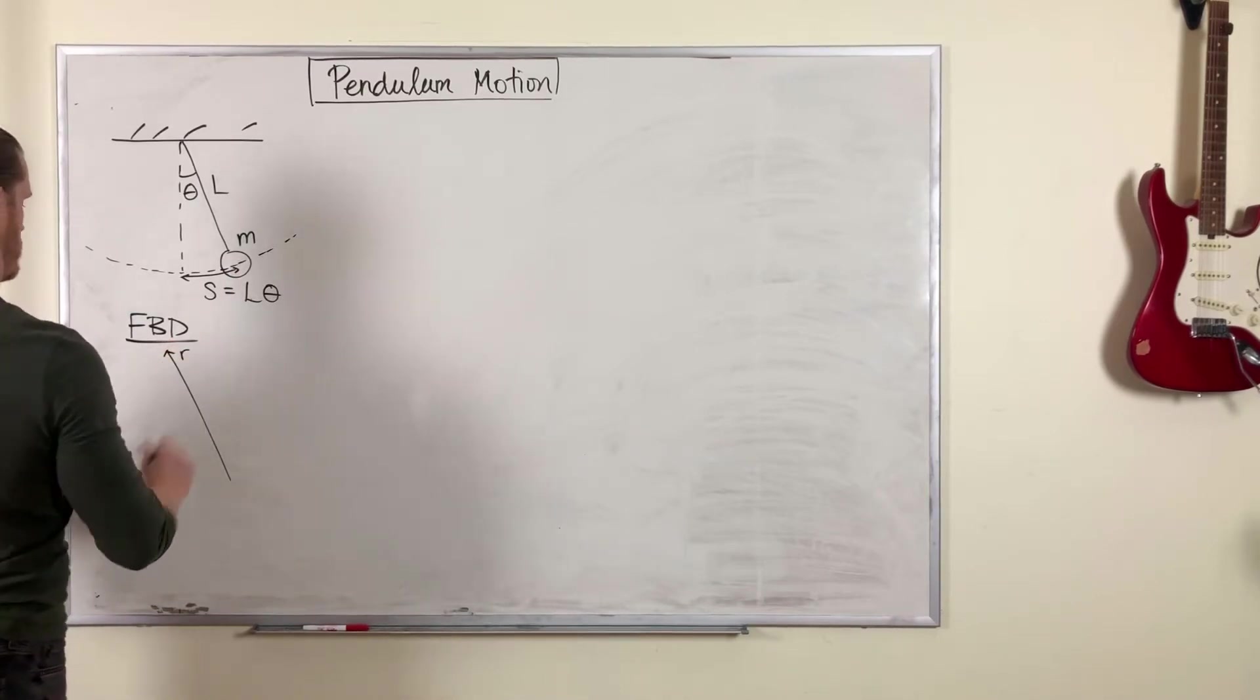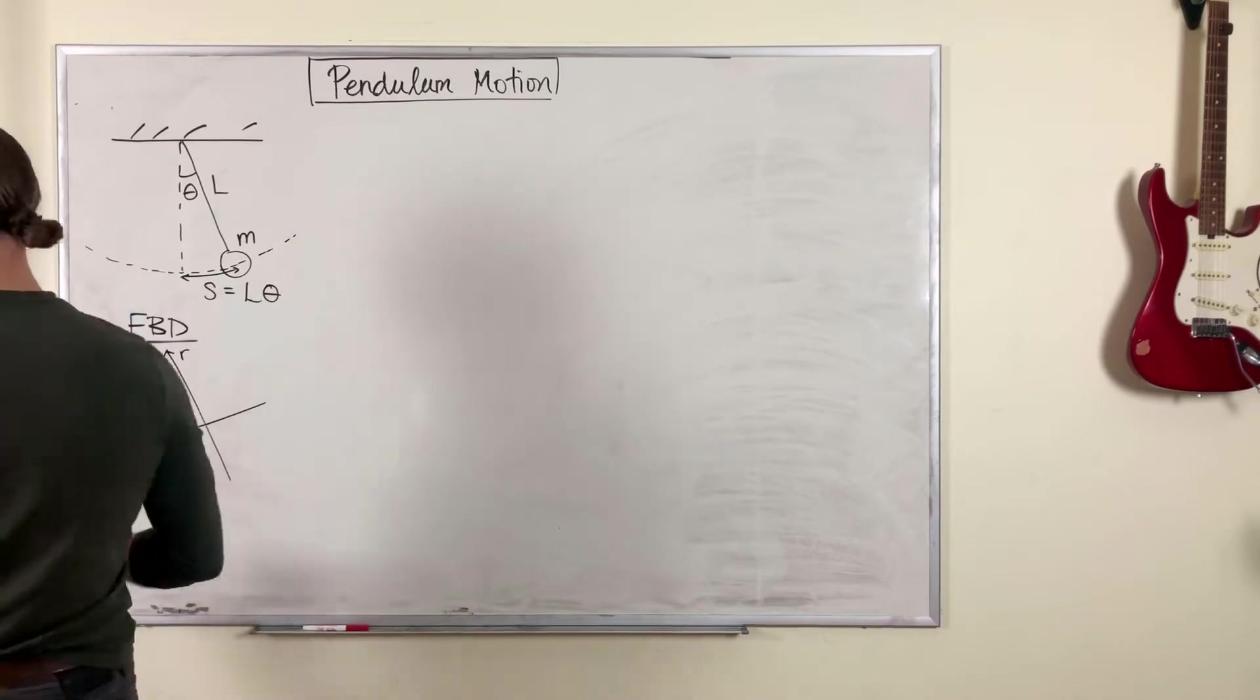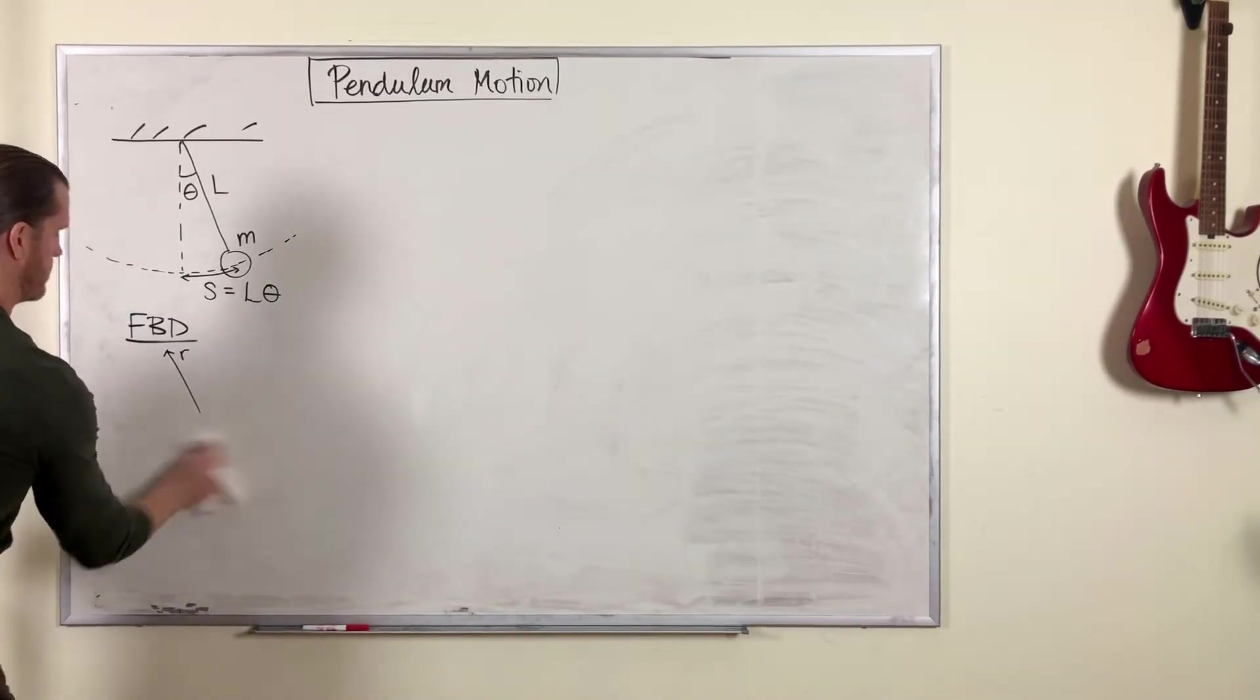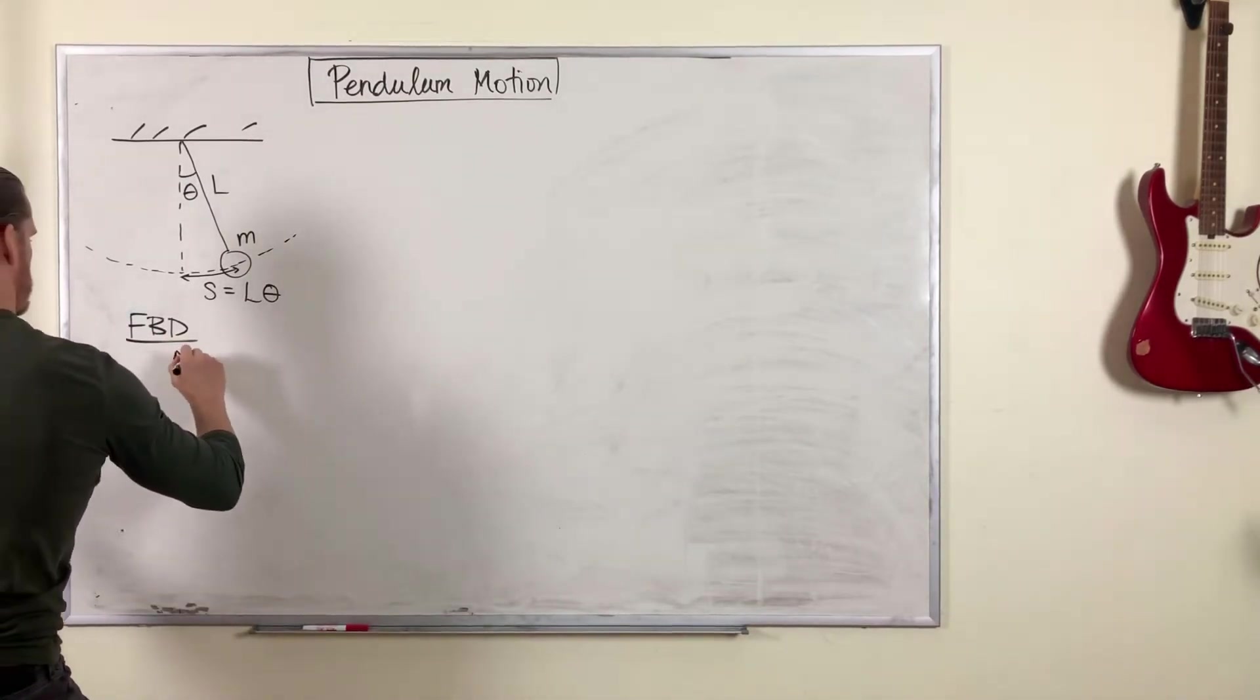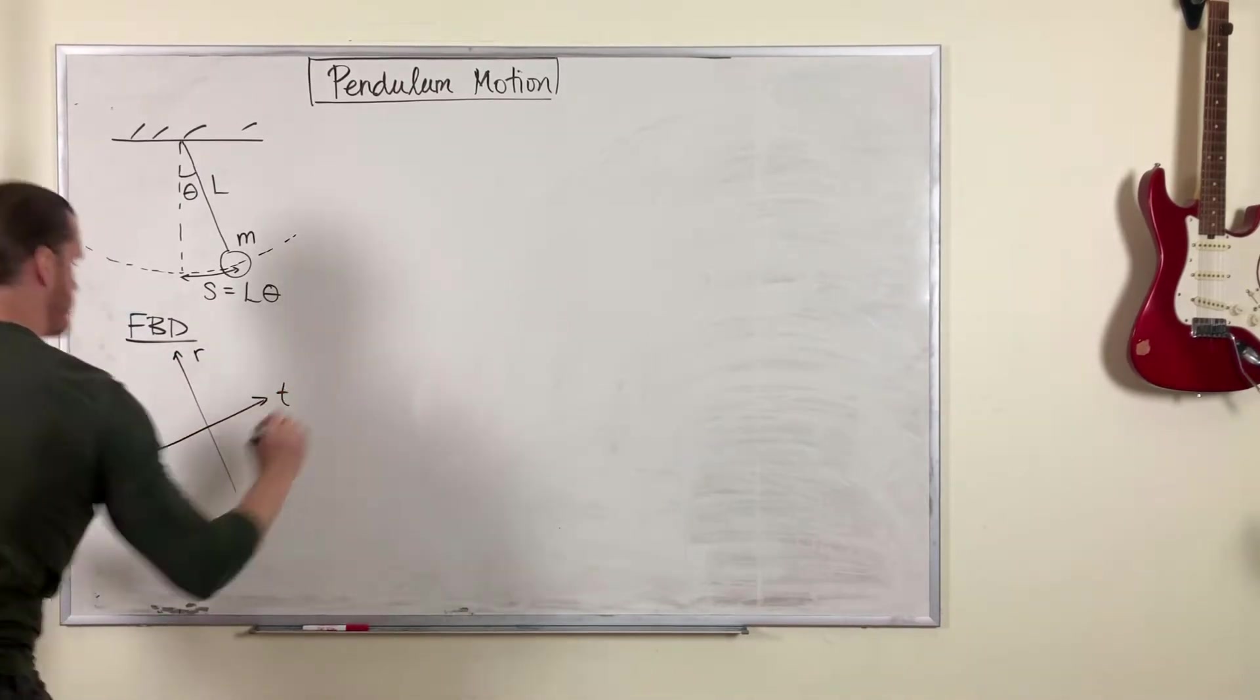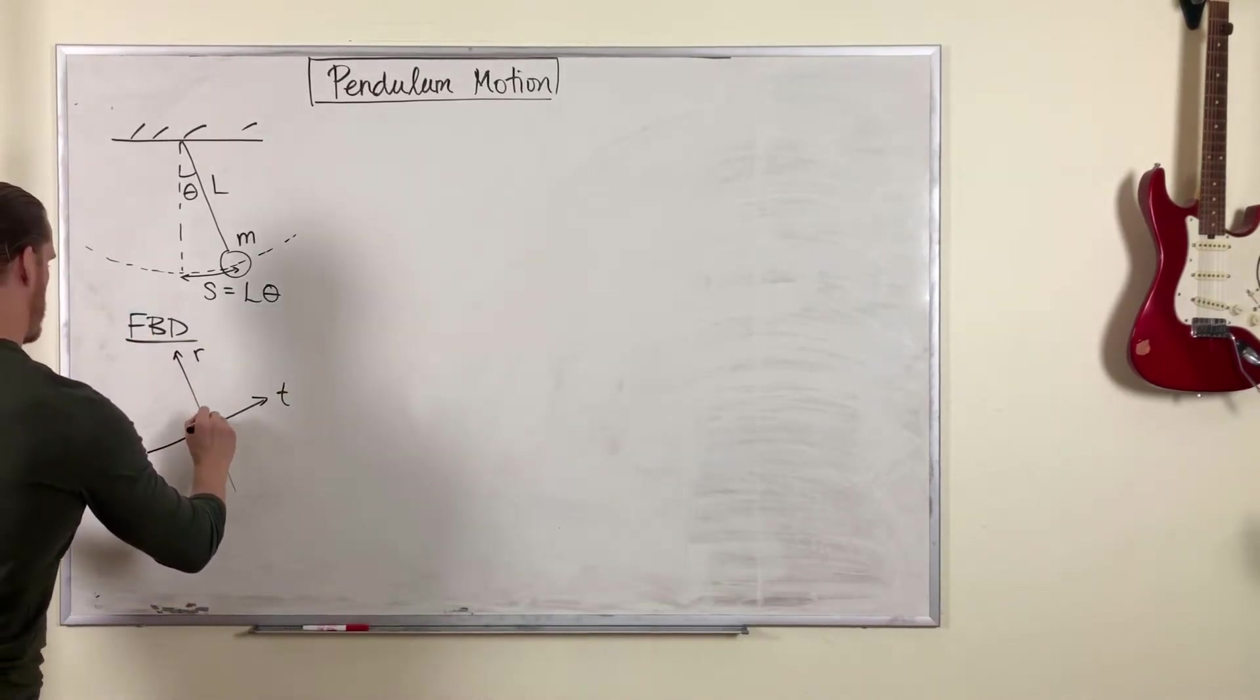So let me draw the radial direction parallel to the string, and the tangential direction perpendicular to it. It's not very perpendicular, is it? Let me try that again. Radial and tangential. Okay, that's a little better. Here's our pendulum bob, the mass.